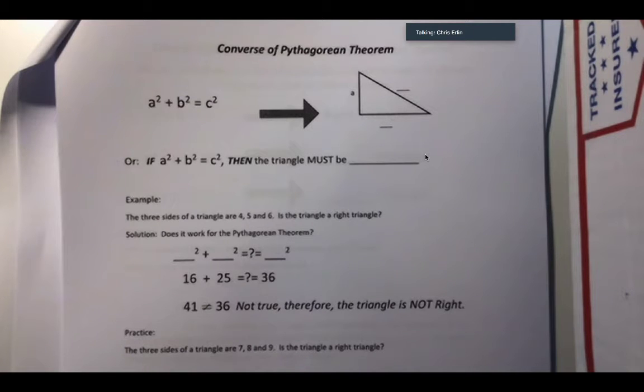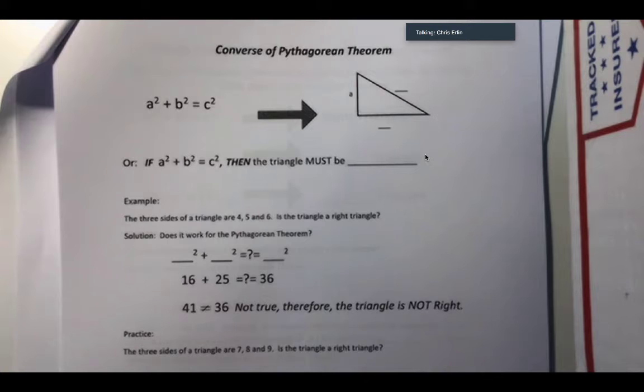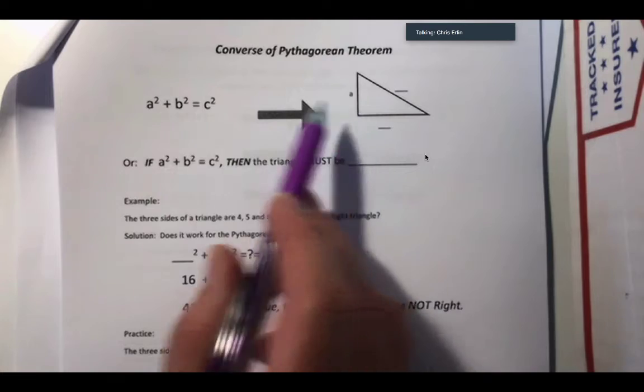Continuing Geometry APAC, this is our Converse Pythagorean Theorem. As we talked about, Pythagorean Theorem is a theorem, therefore it has a hypothesis and a conclusion. If we want to look at the converse of that theorem, then we swap those two.